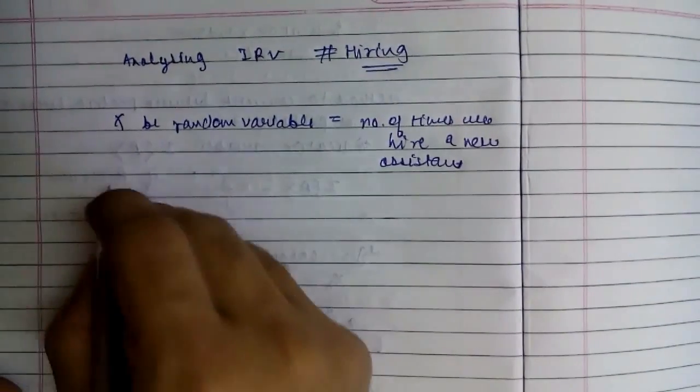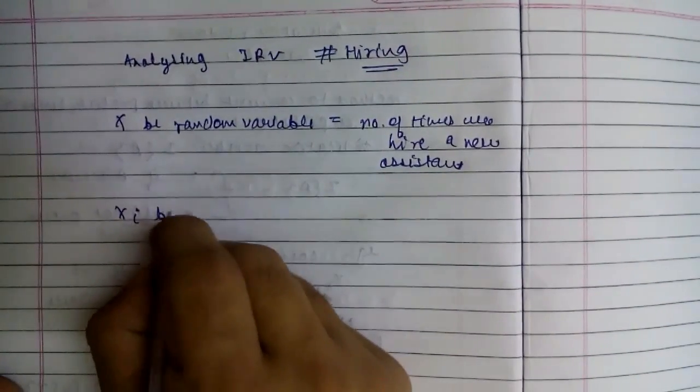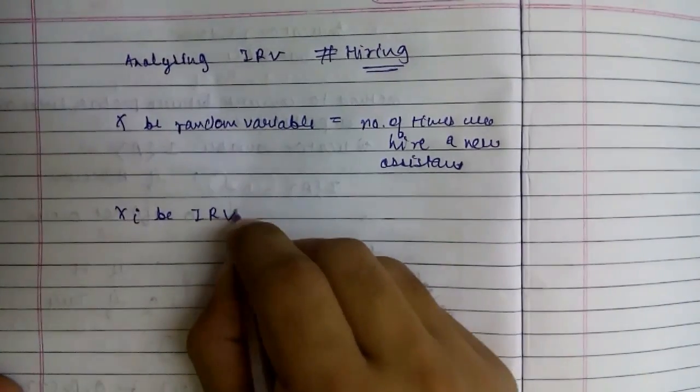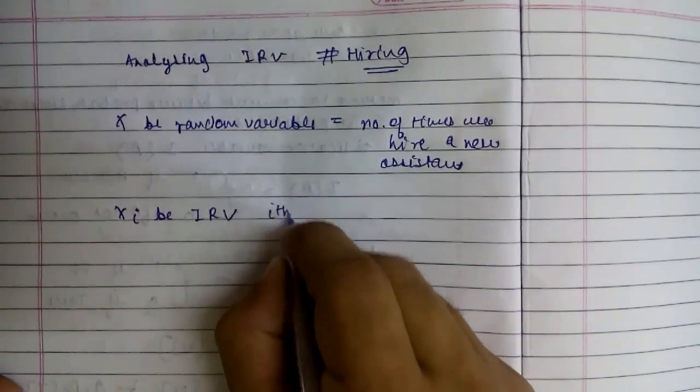And let's say x_i be the indicator random variable for the ith candidate.